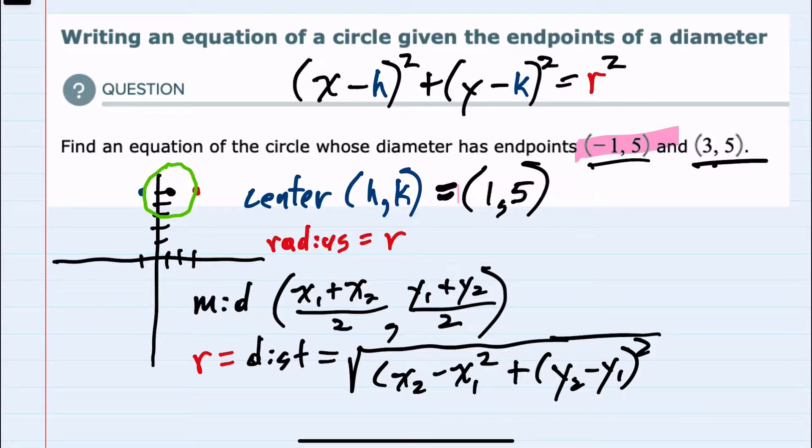But again, in this example, since our diameter is horizontal, we can visually look and see that the distance between the center and one of those endpoints is just two units. So our r is 2.